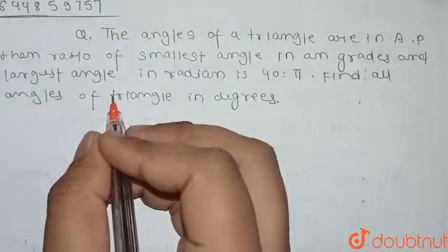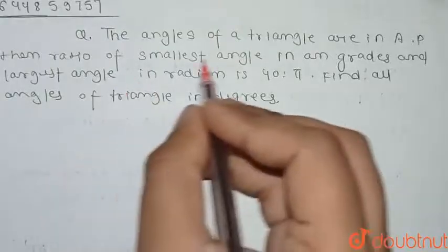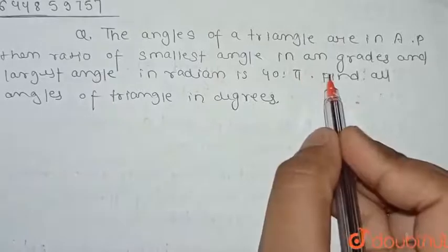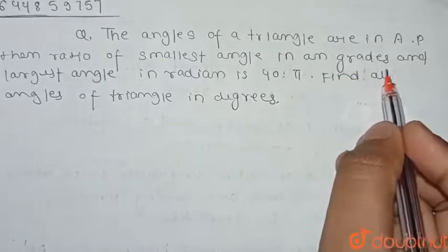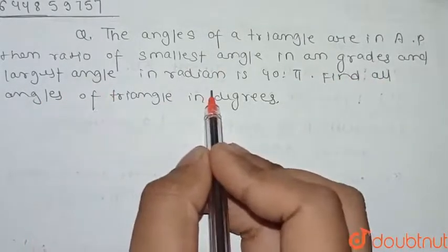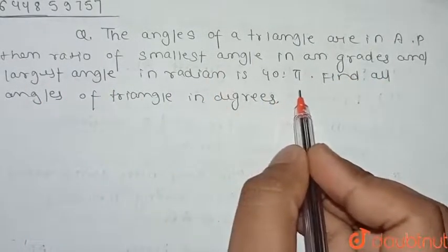Our question is: the angles of a triangle are in AP, and the ratio of the smallest angle in grades to the largest angle in radians is 40 to π.